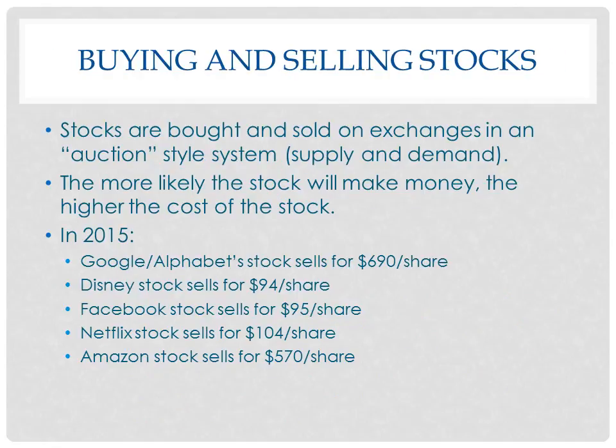When you buy and sell stocks, they're sold on exchanges in an auction-style system based on supply and demand. The more likely a stock will make money, the higher the cost of the stock. In 2015, Google and its parent company Alphabet had stock selling for $690 a share, Disney at $94, Facebook at $95, Netflix at $104, and Amazon at $570 a share. The extremely high share prices of Google and Amazon are pretty rare; most successful companies trade where you see Disney, Facebook, and Netflix.